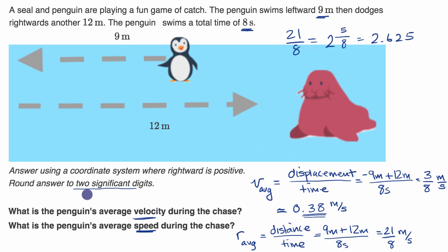If they want us to round to two significant digits, it's going to be 2.6. So it's going to be approximately 2.6 meters per second. And we're done.